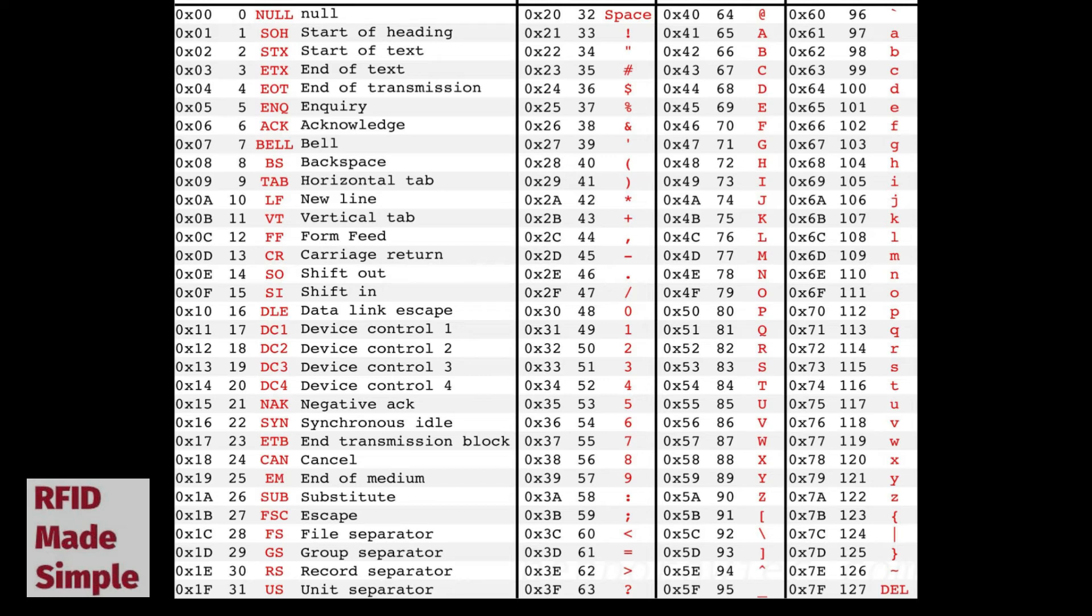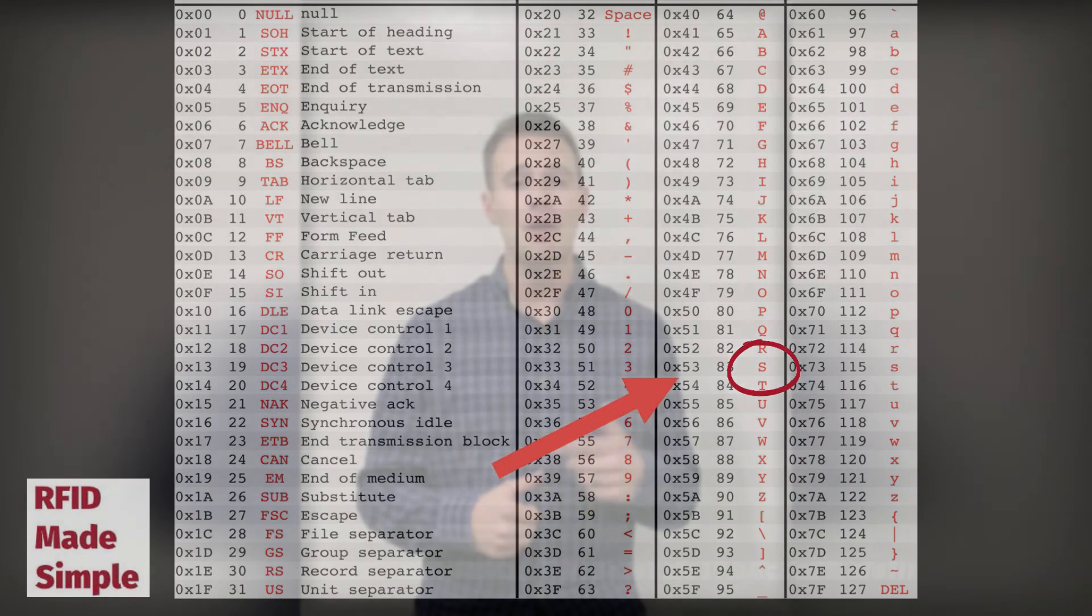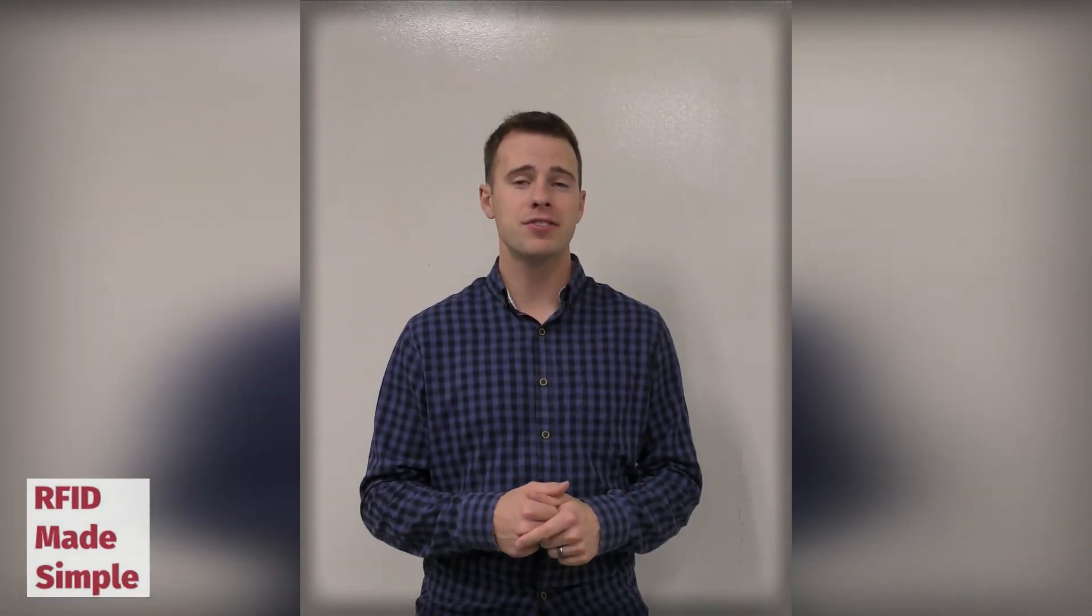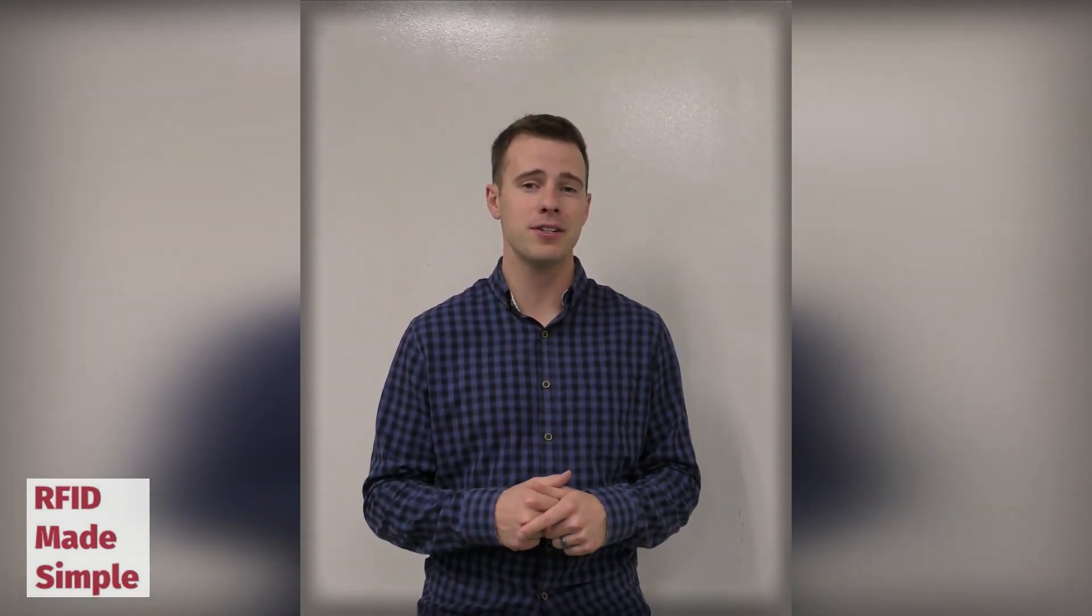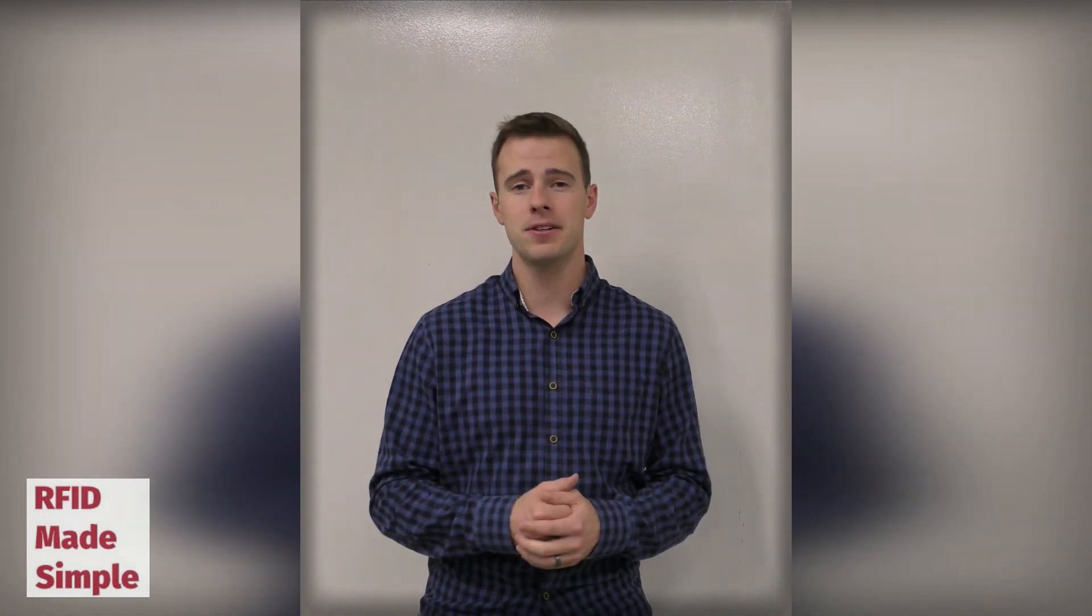For an example, if we want to program into our RFID tag the capital letter S, we would program the hexadecimal characters 53. And then when the tag is read, the software can interpret those hexadecimal characters as ASCII characters outputting the letter S.